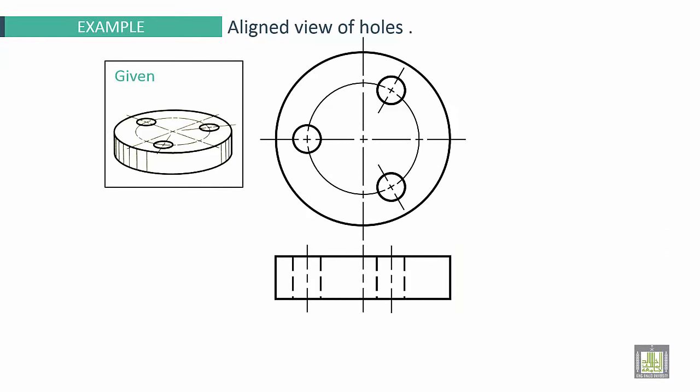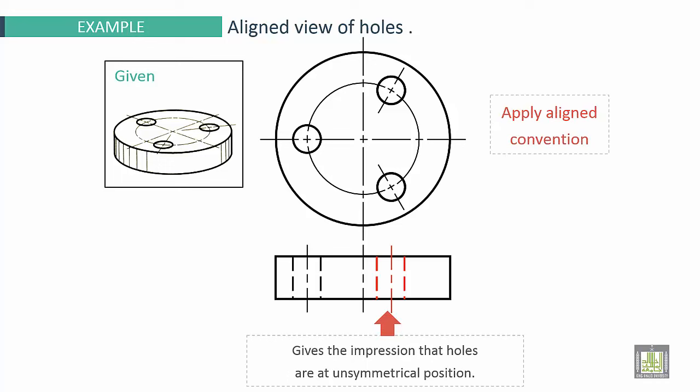Another example with holes. This example is already shown in chapter 4. Let's give the impression that holes are in symmetrical position. So what you have to do: apply Aligned convention. We have to move these holes.